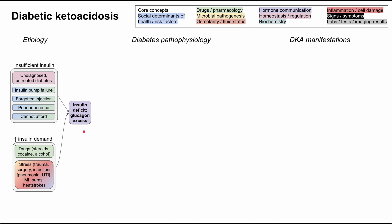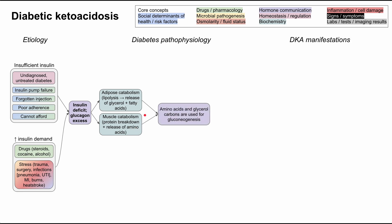When you have low insulin and high glucagon, you begin breaking down adipose tissue and muscle tissue. Breaking down adipose tissue is lipolysis, releasing glycerol and fatty acids. Muscle catabolism breaks down proteins and releases amino acids. Both provide gluconeogenic substrates — amino acids and glycerol carbons — allowing the body to make glucose from breakdown of these tissues. This leads to classic diabetes symptoms also present in DKA: weight loss and polyphagia, because the body is essentially starving.